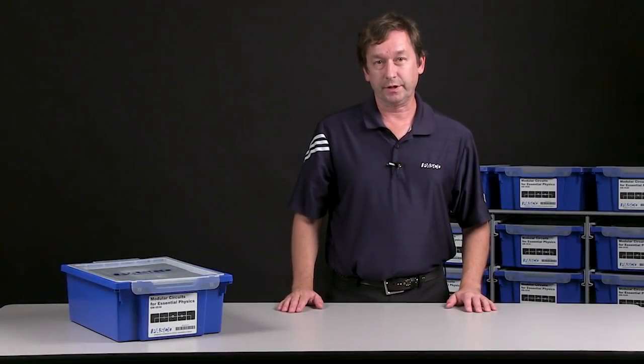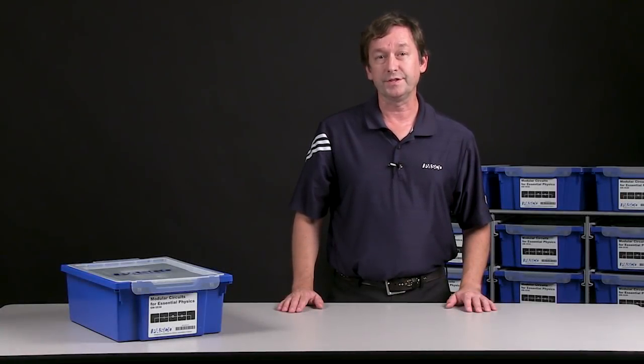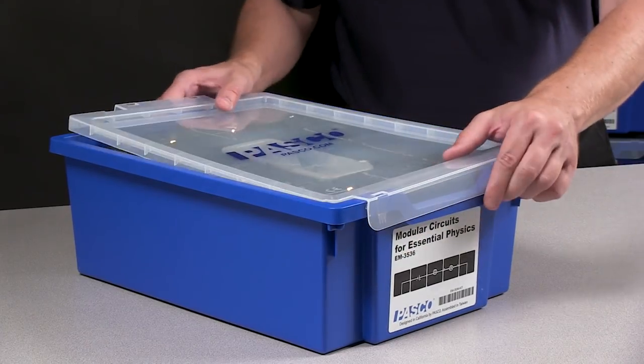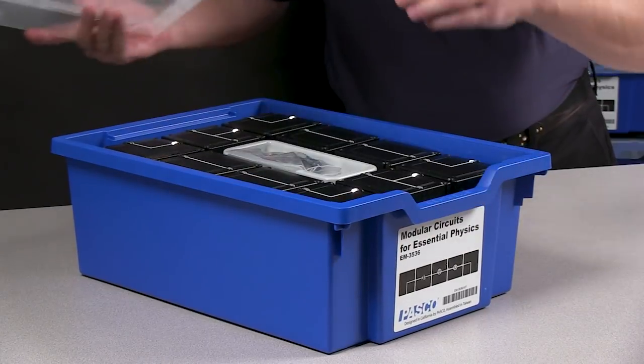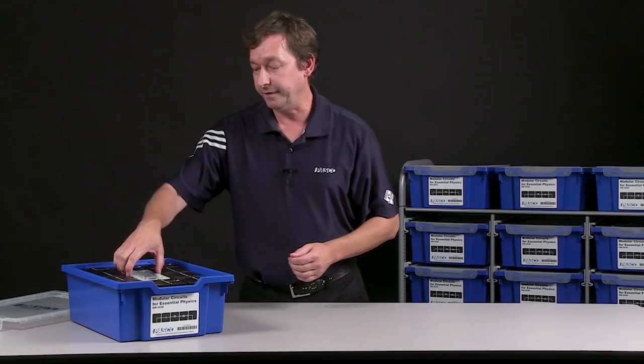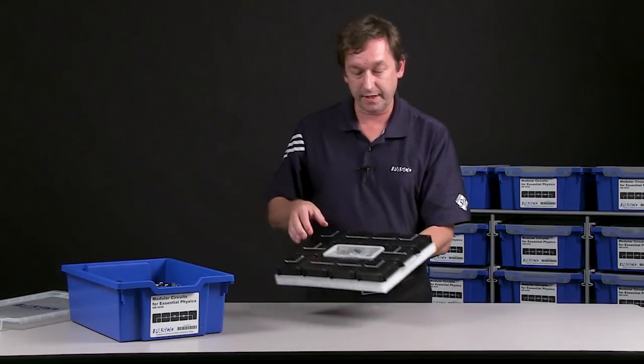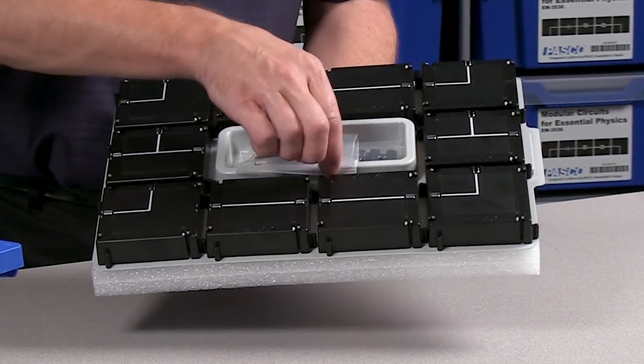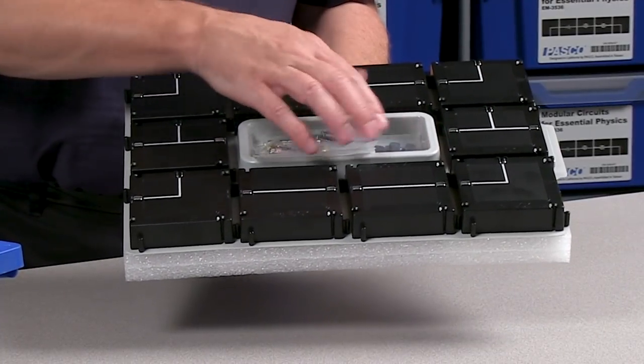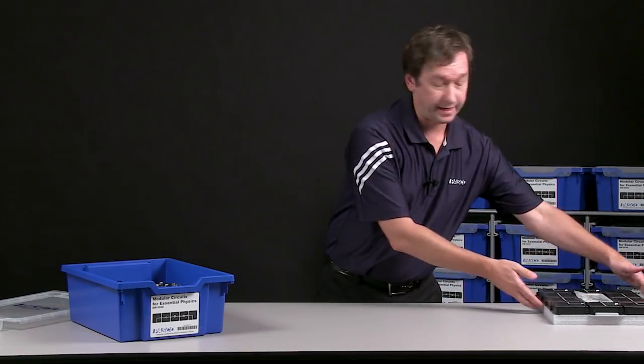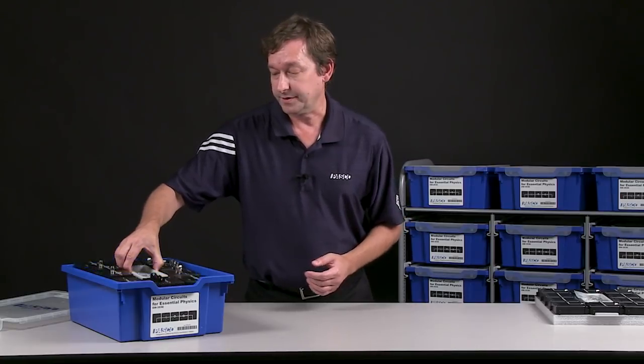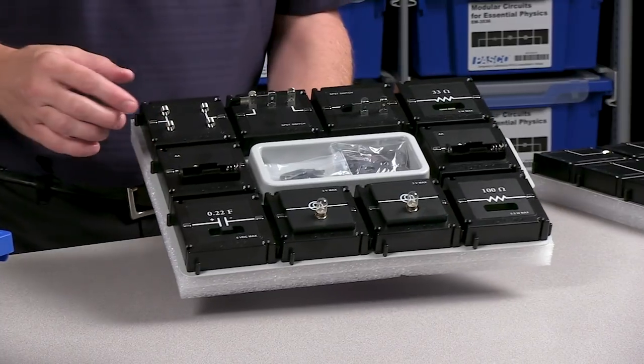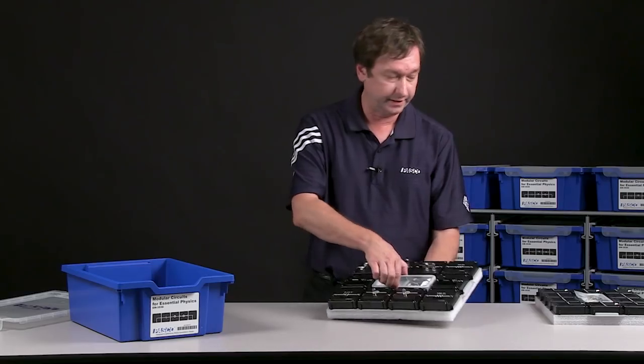The other option for Modular Circuits is Modular Circuits for Essential Physics 3rd Edition. Now this kit has the same Gratnells storage tray, and you'll see that the top two layers are the same. The first layer has the connecting wires. There's our bag of batteries, resistors, and capacitors, as well as the set of connecting tabs. Our second layer has the battery holders, lights, switches, resistors, capacitor, spring clips, and more connecting tabs.